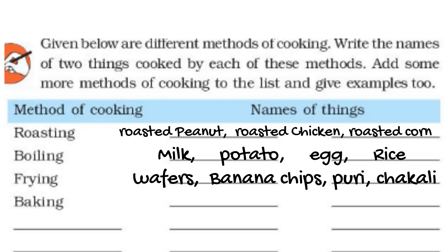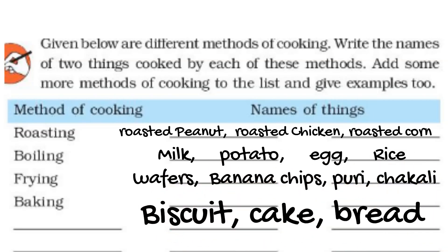Baking is a process done in an oven or on pans, but there is no direct connection with flames. In roasting there was direct flame contact, but in baking there is only a pan or an oven. We bake food items such as biscuits, breads, muffins, and cakes.